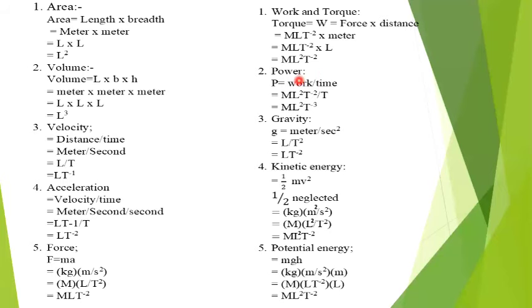If we work on power, the formula is work upon time. Work dimension is ML²T⁻², and time unit is capital T. Replacing, we get the dimension of power as ML²T⁻³.